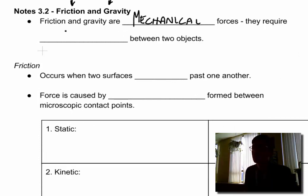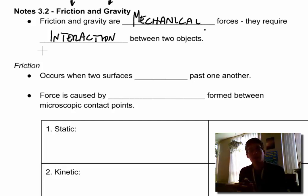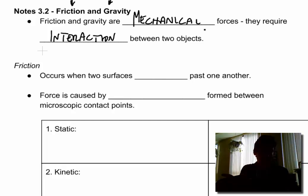In other words they require an interaction between two objects. So when we're talking friction this can be a box on the table, it can be your hand against hand. Gravity is any two bodies with mass. Any two bodies with mass exert some form of gravity on each other.